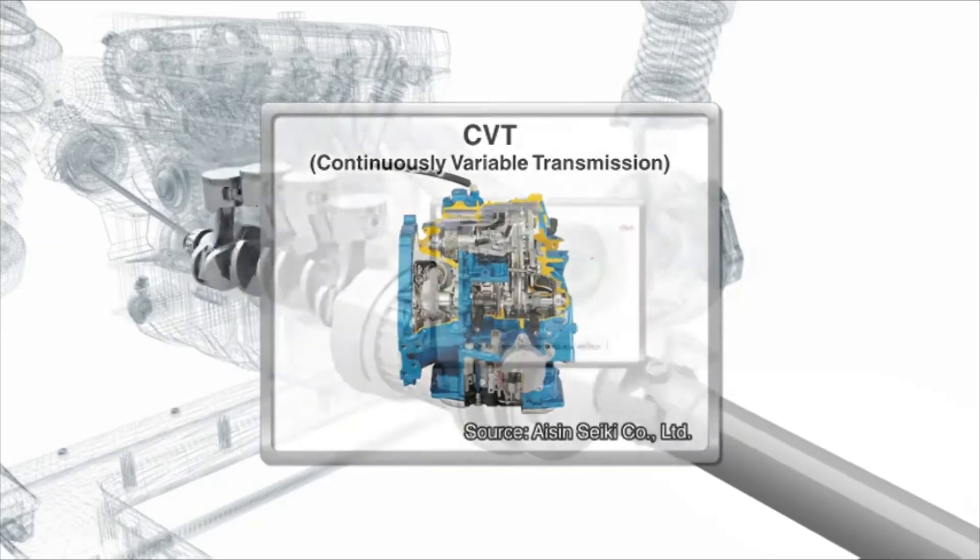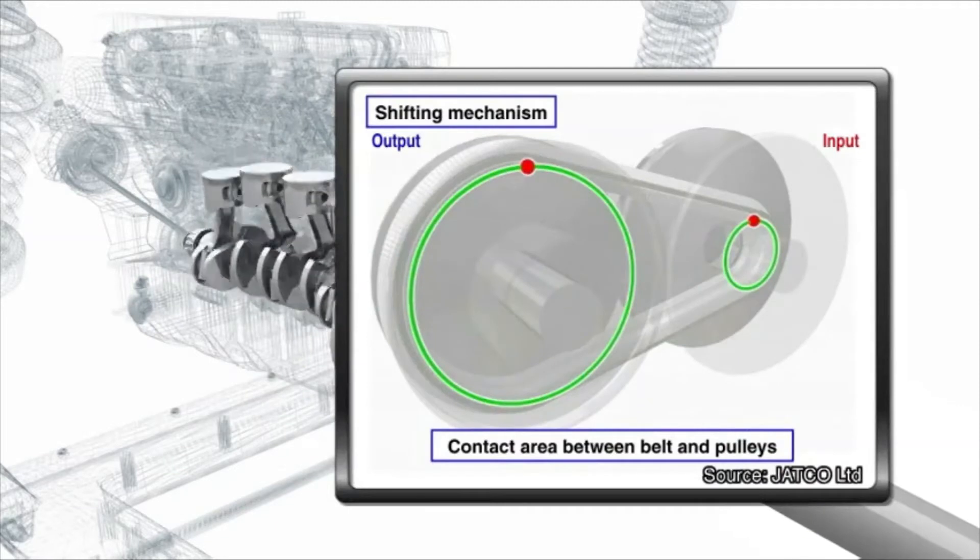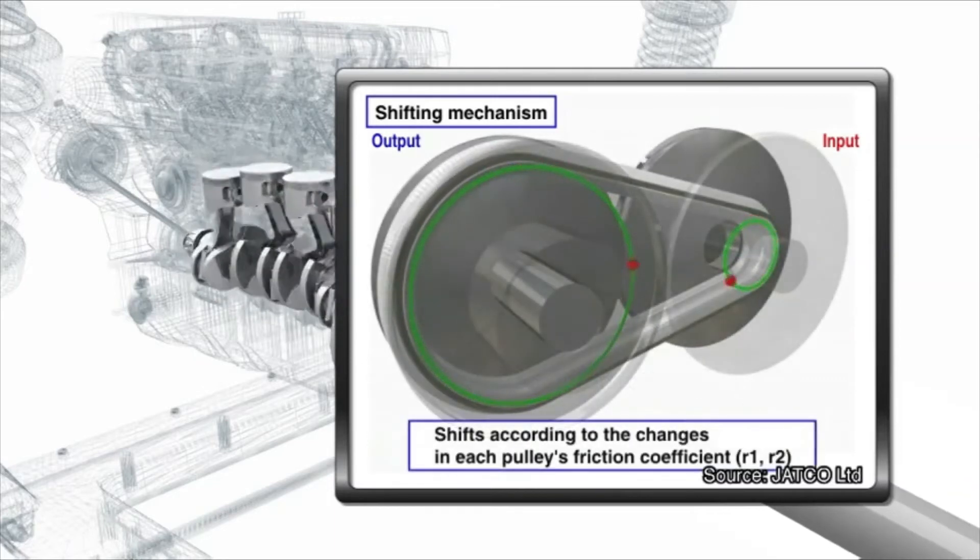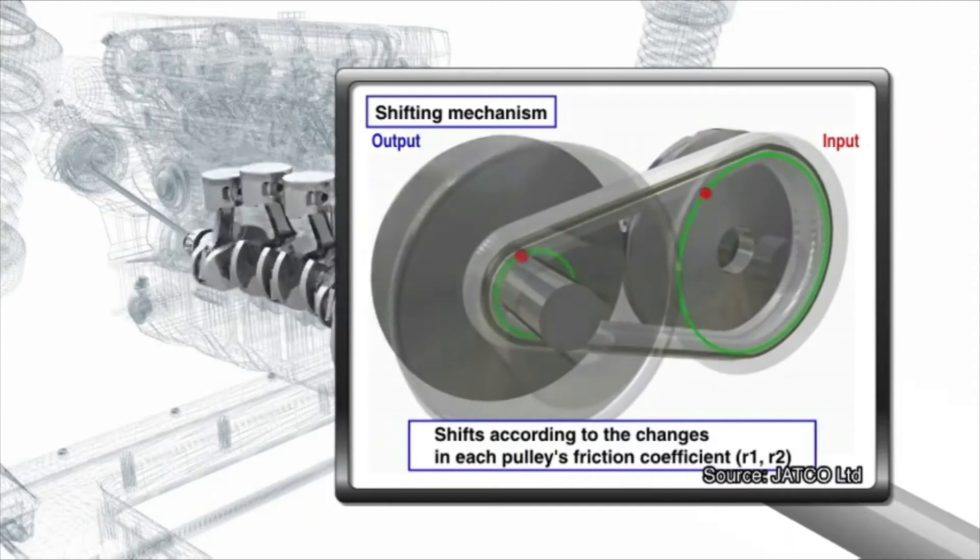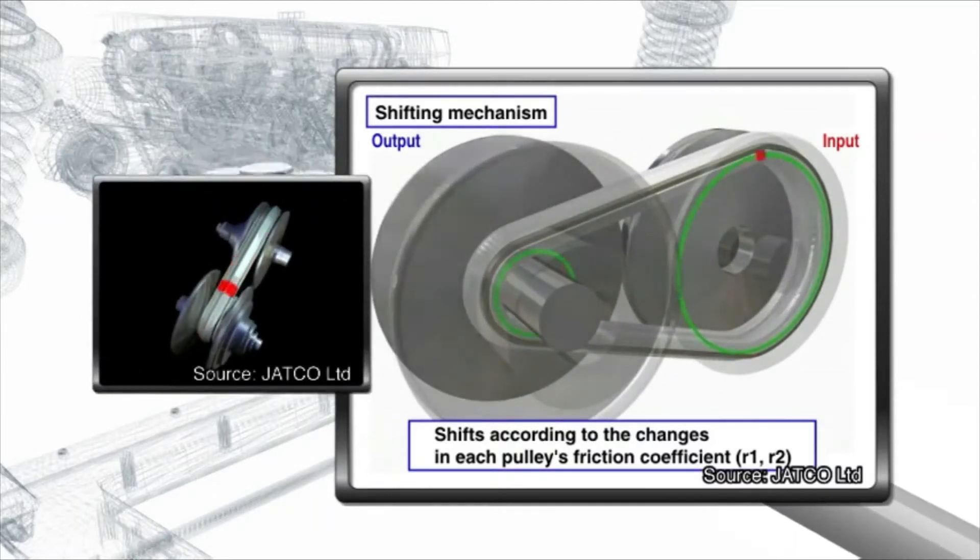A typical CVT system has an input shaft and an output shaft that are attached to a pair of opposing cone-shaped pulleys with a belt running in between. As the distance between the pulleys widens or closes, an infinite number of gear ratios are created without any steps.